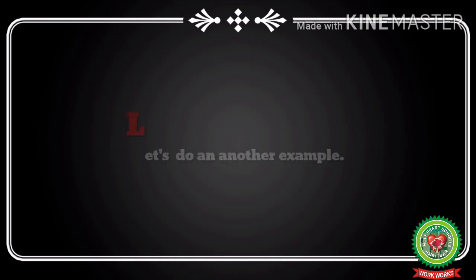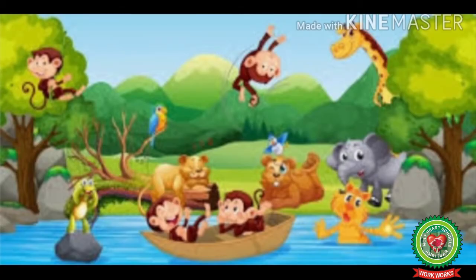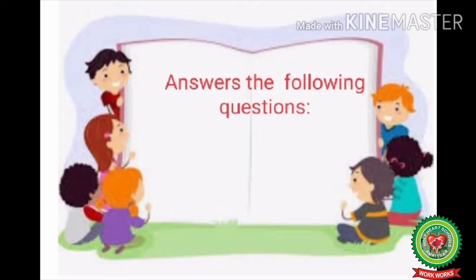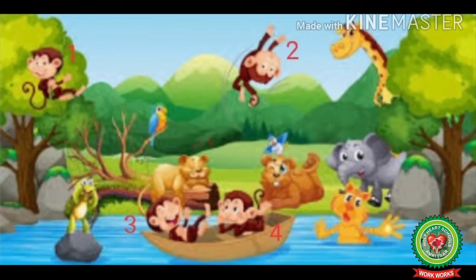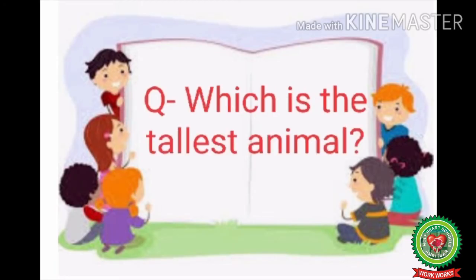Now let's do another example. This is the scene of a forest and we can see different animals here. We have to answer the following questions. Question one: how many monkeys are there? Looking at the picture, there are four monkeys, so the answer is four monkeys.